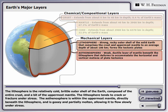The asthenosphere is within the uppermost mantle, directly beneath the lithosphere, and is gooey and partially molten, allowing it to flow slowly under stress.